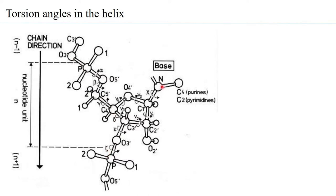Other than the backbone torsion angles, the bond between carbon 1 of the deoxyribose and the base — the N-glycosidic bond — also allows movement, and that torsion angle is represented by chi. This is not really part of the backbone of the helix, but movement around it leads to conformational changes.